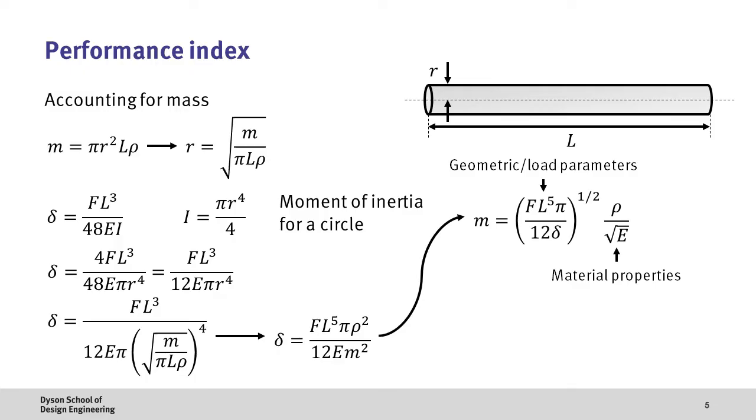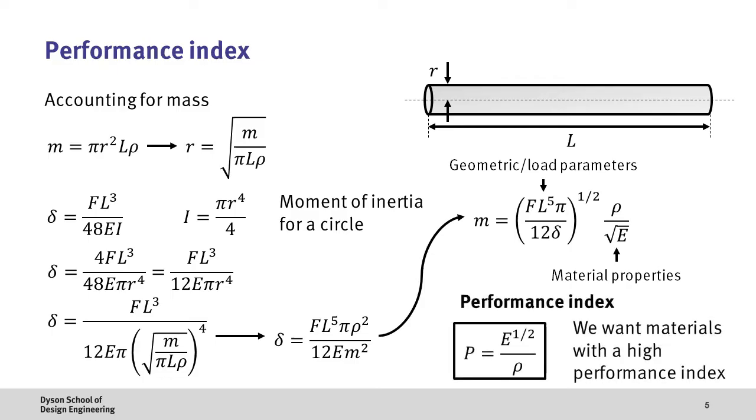If we have a look at the various terms in the mass equation we can separate these into two types. Firstly there's a set of geometric and load parameters which are governed by the design of the bike. Secondly and more importantly we have properties which are defined by what materials we select. If we then take these material parameters and think about what we're trying to achieve we'd like to reduce the mass and therefore having a low value of rho over square root E would achieve this. Conventionally we want to define a performance index which we maximize. So what we'll do here is flip this upside down to give our final performance index P which is equal to square root E over rho.